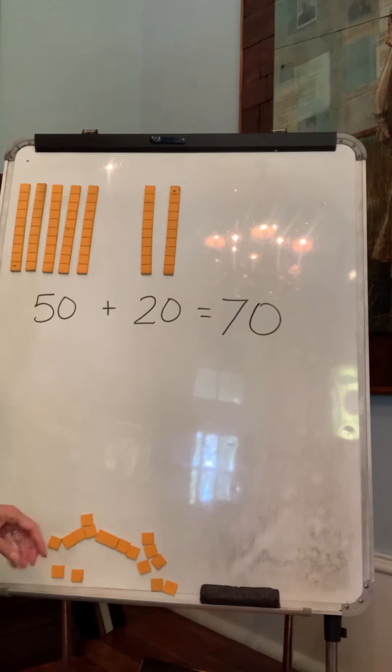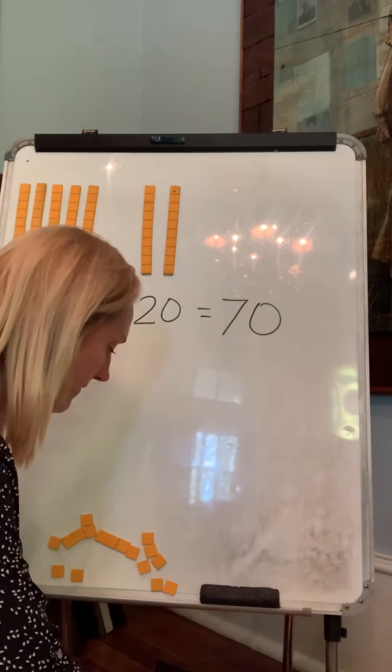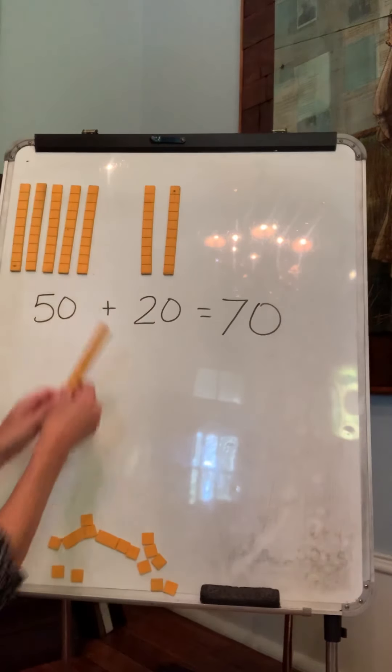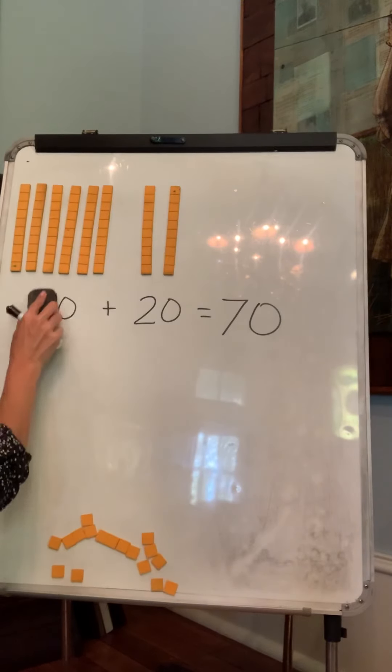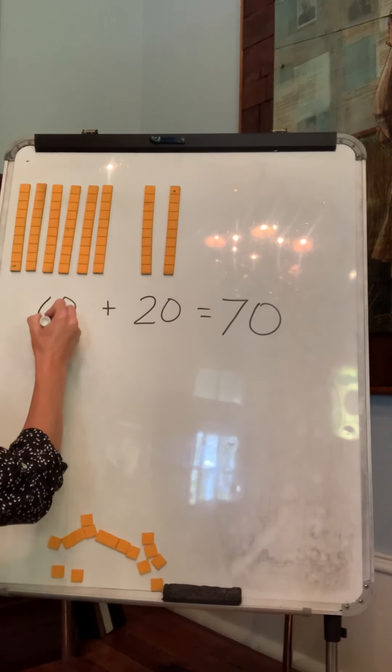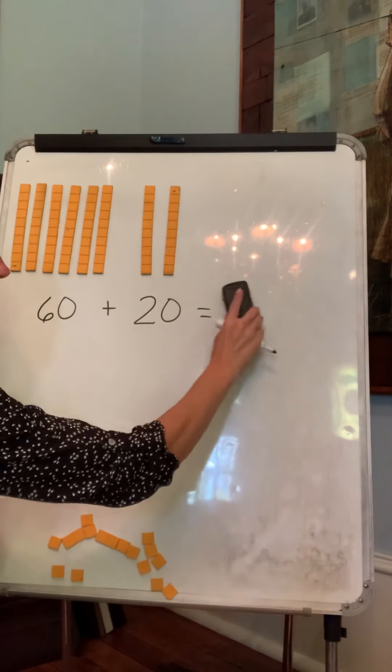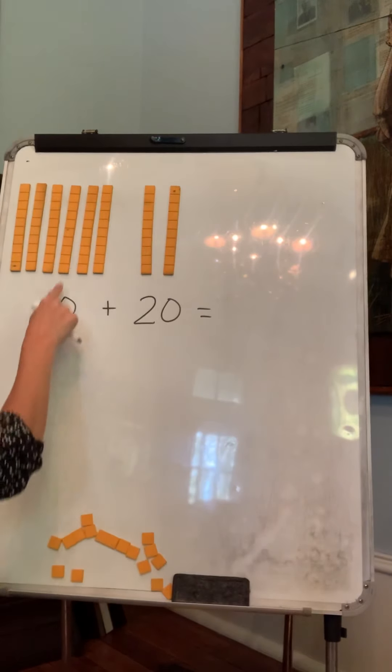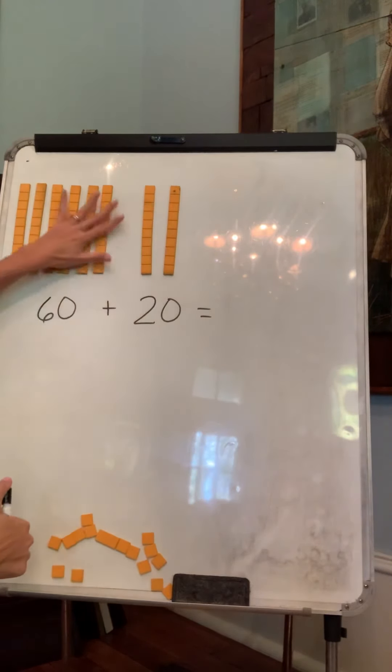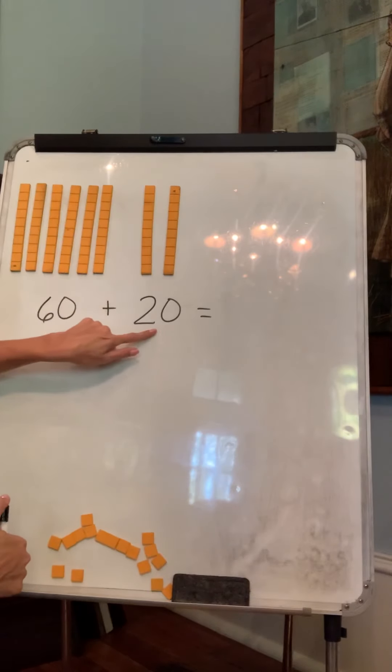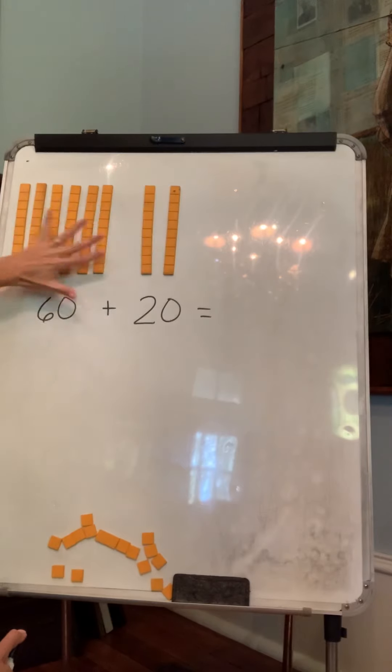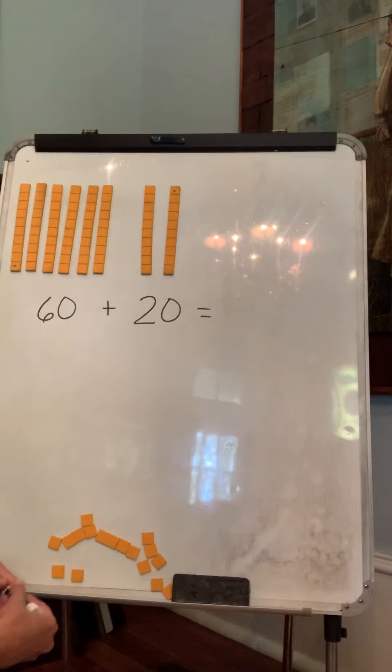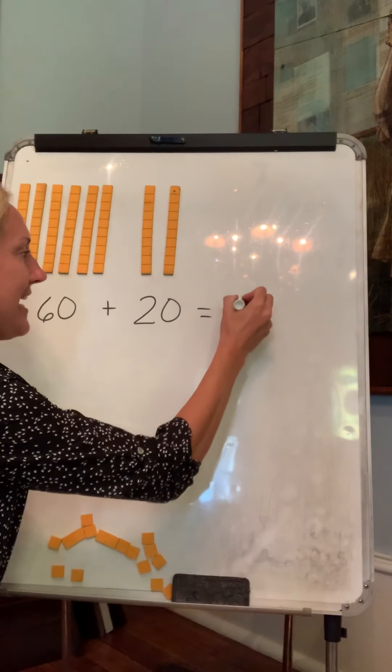Now, what if I have six tens over here? So that's 60. How many tens do I have now? I have six tens for 60. 20 is two tens. How many tens do I have all together? Well, six plus two is eight. Eight tens.